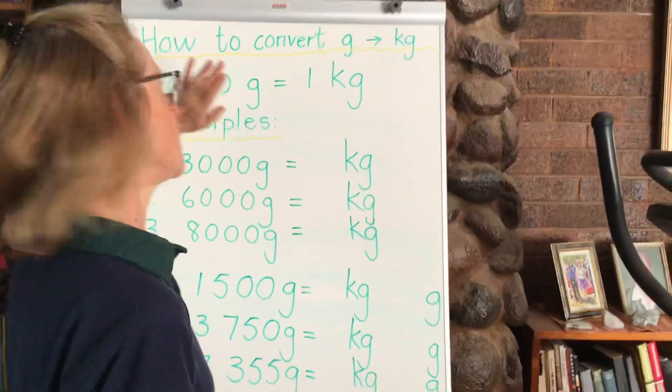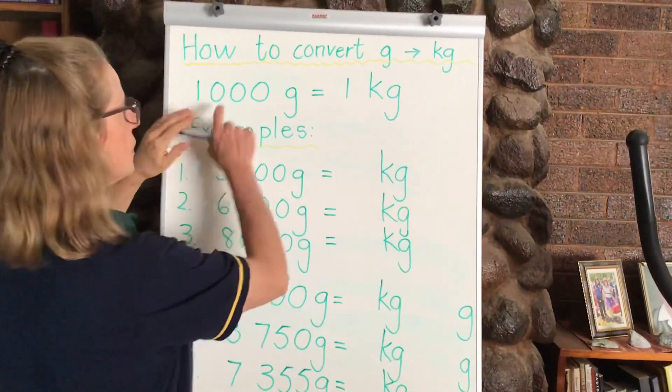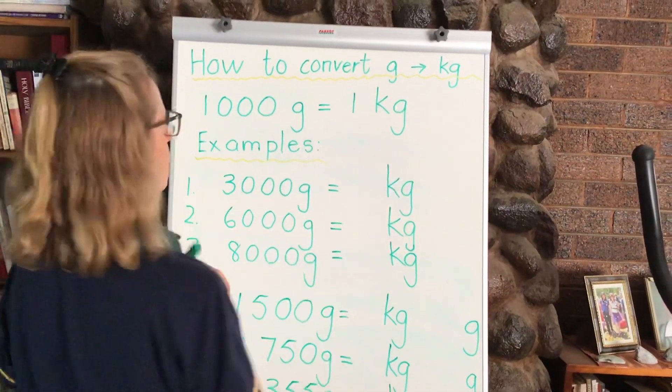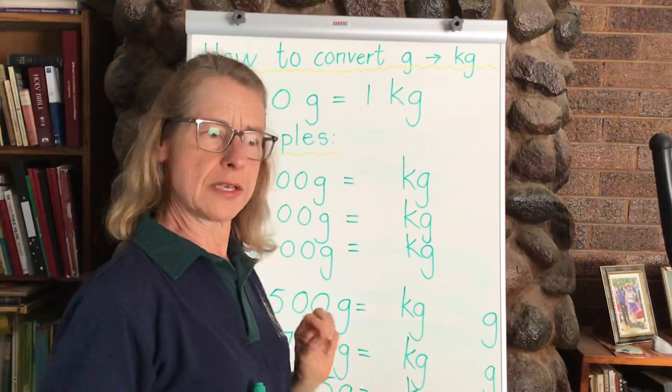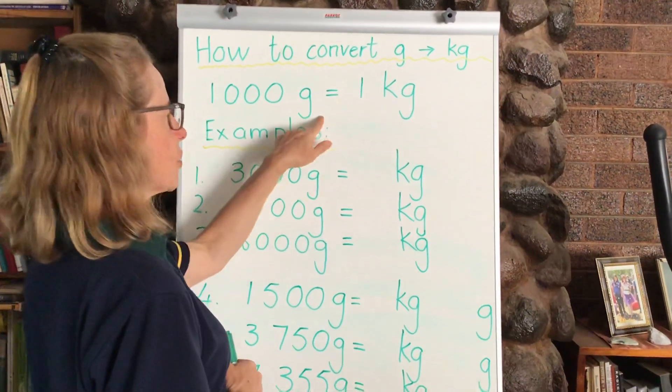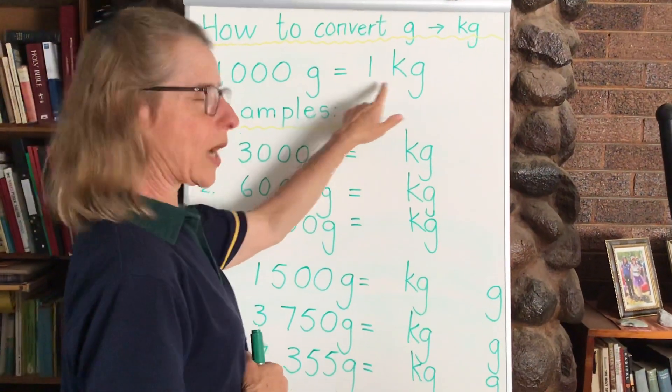So let's have a look at the board here. How to convert grams to kilograms. Now remember the information you already know which is 1,000 grams are equal to 1 kilogram.